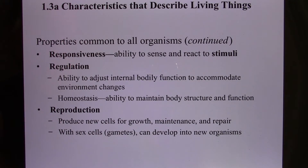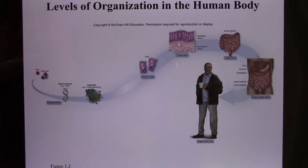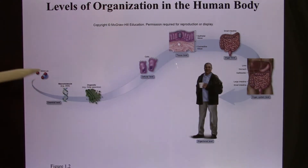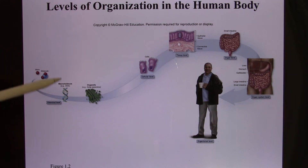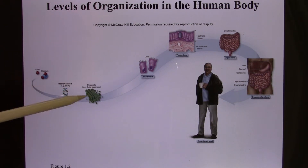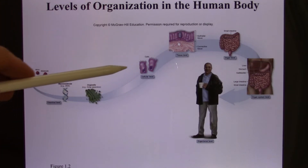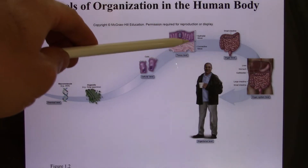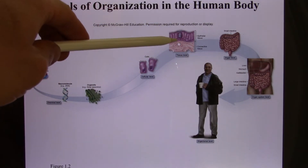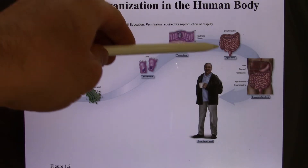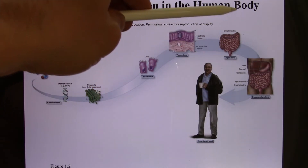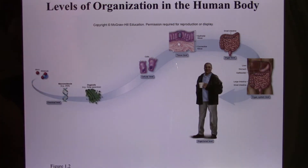Living organisms also reproduce. They are organized starting from the atom, then small biomolecules, organelles, cells, and a lot of cells together form tissues. Tissues form organs, organs form organ systems, and eventually that's you.